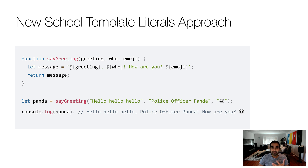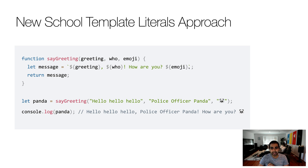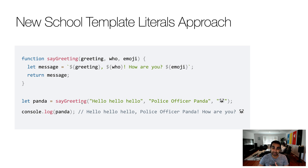To make the template literal resolve into the values we want to show, we use the dollar sign and then curly brackets with the variable we want to show. The interesting part is that I'm not doing anything special to separate the static text from the JavaScript expression — it is all just provided inline. You can see greeting, comma, who, exclamation mark, 'how are you' — everything is provided without any extra formatting. I just delineate the part that needs to be evaluated as a JavaScript expression using the dollar sign and curly bracket format. You open the whole expression with a back tick and close it with a back tick as well. Calling it with 'hello, hello, hello', 'police officer panda', and the panda emoji and logging it to the screen — everything is displayed appropriately. It greatly simplifies how we work with strings.